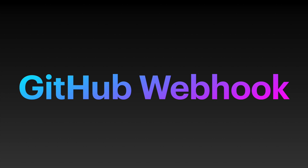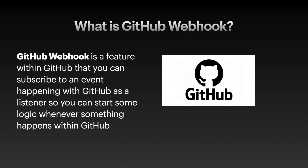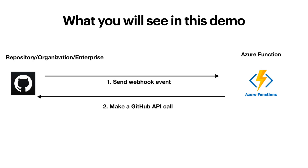Before going any further, let's learn about what a GitHub webhook is. GitHub webhook is a feature within GitHub that you can subscribe to events happening within GitHub as a listener. You can start some logic whenever something happens within GitHub — for example, whenever somebody creates an issue, makes a comment, commits to a branch, creates a branch, or changes security settings. Most actions have some kind of webhook associated with them, and you can use that as a triggering point.